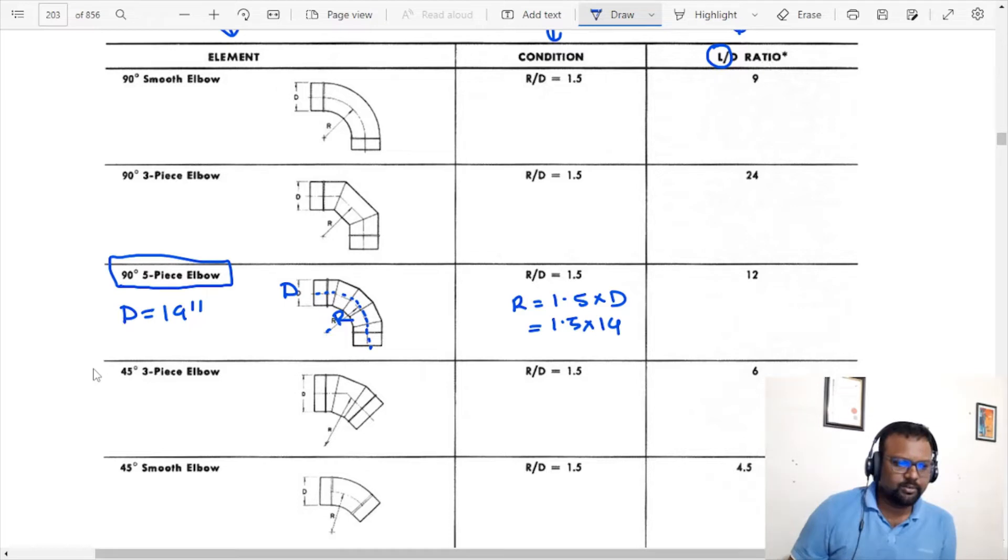The L/D ratio is 1.5 into 14. So this is the L/D ratio. We have to get the actual loss. The actual loss is 0.1 inches.